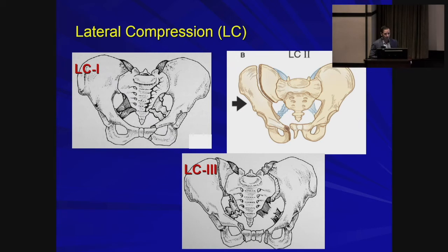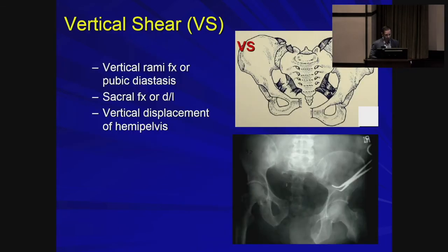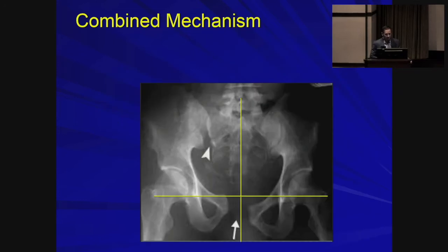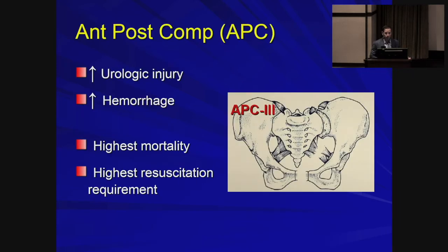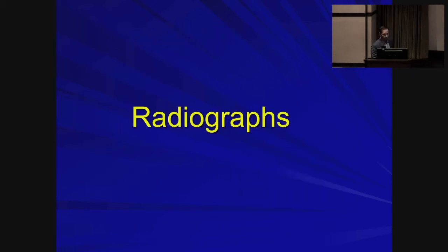The third type is vertical shear, seen with a fall from height, where there is dissociation of all articulations of the hemipelvis with vertical displacement. A classic article from shock trauma on a large series of high-energy pelvic fractures showed these are mostly high-energy injuries — motor vehicles or pedestrian struck — with lateral compression being the most common. Anterior-posterior compression, however, has the highest mortality and highest need for resuscitation.